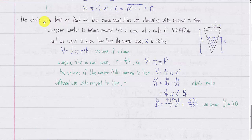With the chain rule, this lets us solve a new class of problems called related rates problems. Related rates problems are when you have a bunch of variables that are related to each other, and we want to find out how the variables' rates of change over time are related to each other.